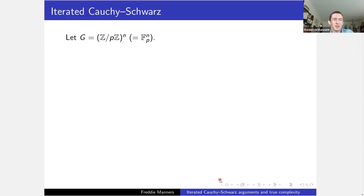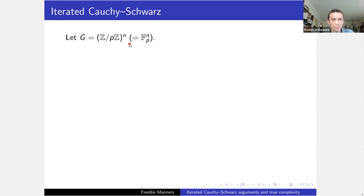Throughout this talk, I'll fix some abelian group that could probably be a fairly general abelian group, but I'm always going to assume it's Z mod p Z, or F_p to the n, according to our preferences. I'm not really assuming that p is small and n is large, or that p is large and n is small, or any of those. These parameters could be any sizes you want. So everything encompasses both the cyclic group setting and an F_p to the n where p is small setting.